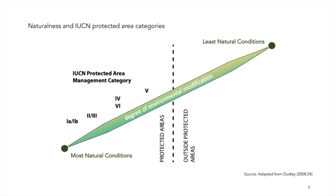Rather, their application is situational and is based on maximizing nature conservation for a particular landscape or seascape context. All IUCN protected area categories are important for biodiversity conservation, although some key biodiversity areas may need special protection to ensure species remain extant. Such management may be best established under the objectives and management guidance for Category 1 to 4 protected areas, although Category 5 and 6 also play a valuable role in contributing to such biodiversity conservation.